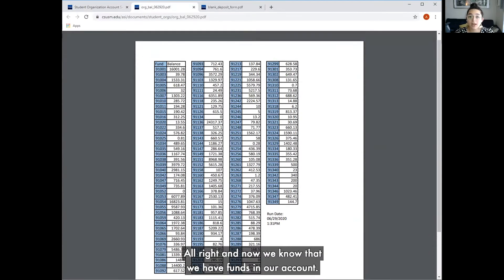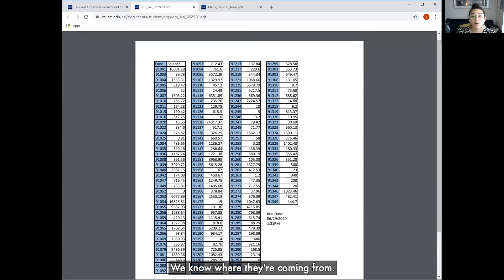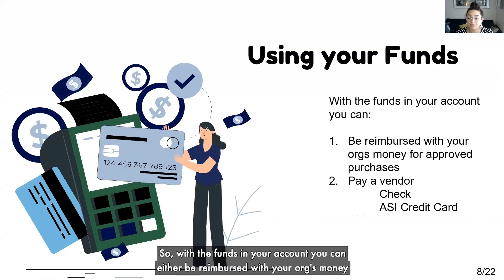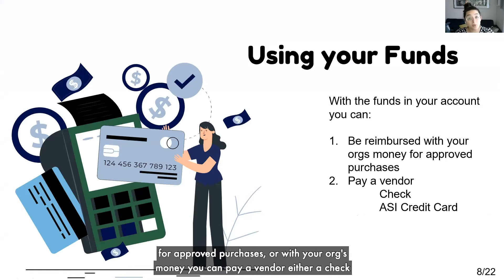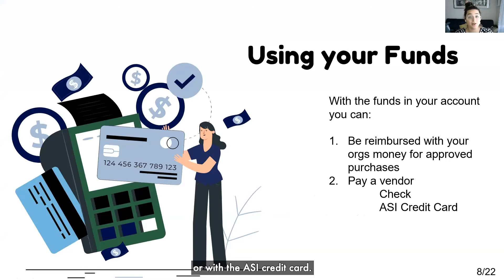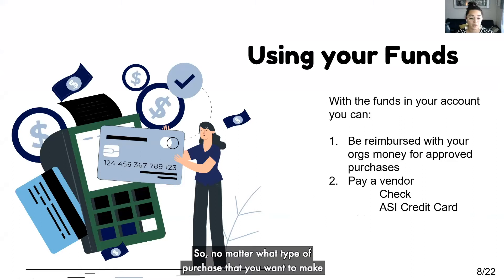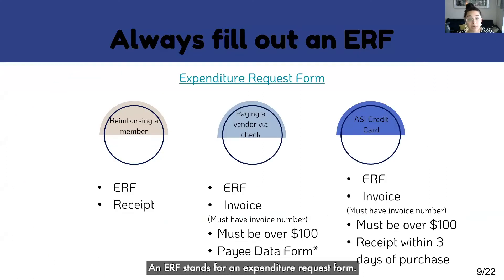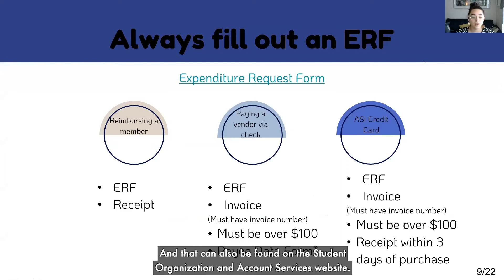Now we know that we have funds in our account and we want to know how to use them. With the funds in your account, you can either be reimbursed for approved purchases, or you can pay a vendor either by check or with the ASI credit card. No matter what type of purchase you want to make for your org, it all starts with an ERF — an ERF stands for an expenditure request form — and that can also be found on the Student Organization and Account Services website.